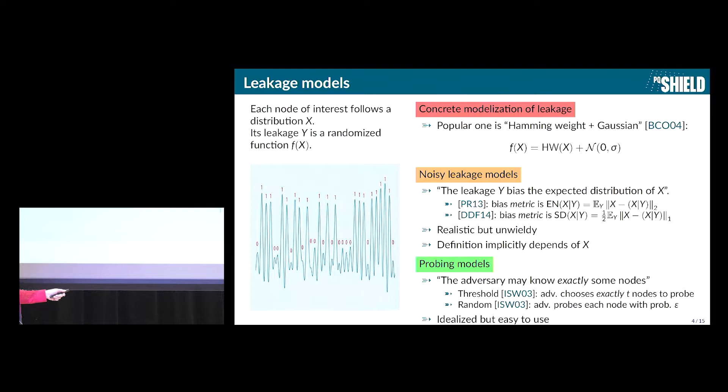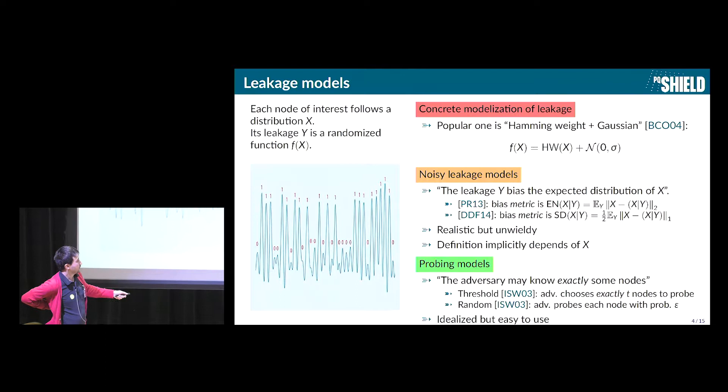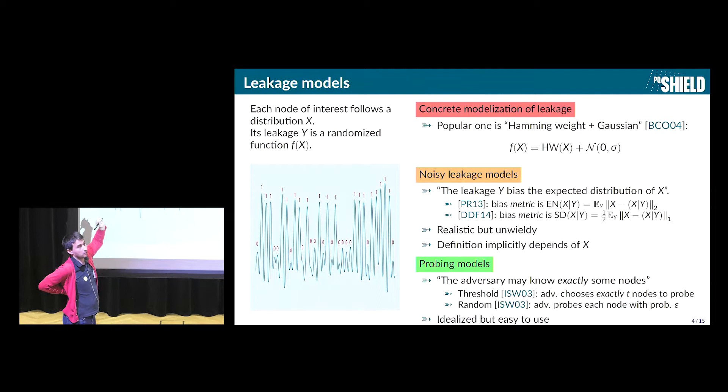And so you can only use classical computer science tools and logic tools to analyze it. But if you get a leakage like that, then you need to use probability and statistics and information theory tools which cryptographers feel less at ease with, and so it's more complicated to work with it. And this is actually the reason why the most popular models are probing models. And in probing models, we assume that the adversary may know exactly some nodes of interest. So in the threshold probing model, which is the most used, the adversary can choose exactly T nodes to probe. And in the random probing model, for each node, he will know its exact value with probability epsilon, and with probability 1 minus epsilon, he will not learn anything. And in contrary to the noisy leakage model, this one is idealized but easy to use.